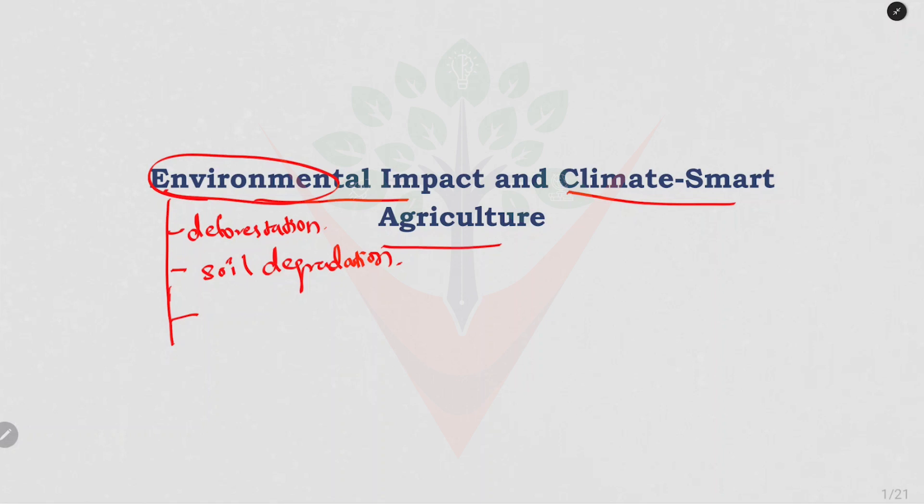Excessive irrigation can deplete the water sources, and runoff from fertilizers and pesticides can pollute the water bodies, leading to water pollution.